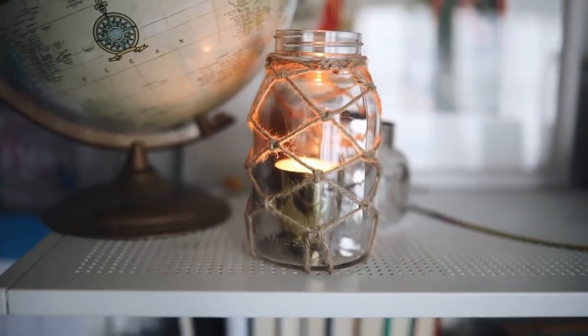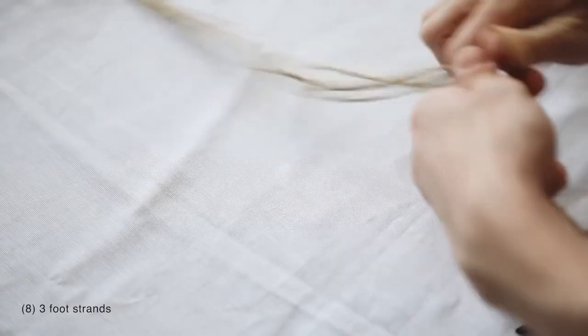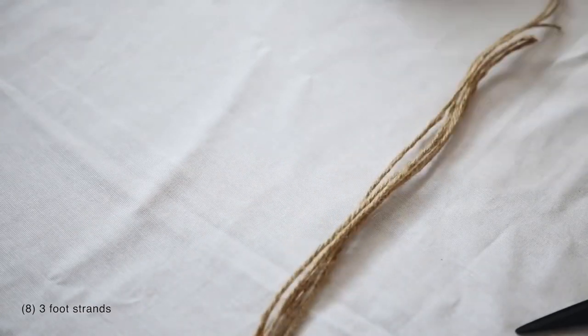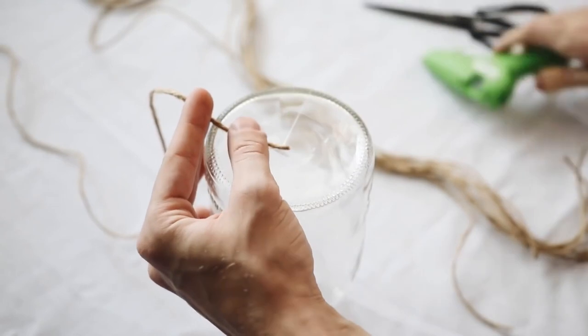Next up we're going to be making this DIY macrame lantern candle holder. I'm going to be using a mason jar along with some hemp cording. The first thing I'm going to be doing is measuring out about two-yard sections of hemp cording, and you're going to need...